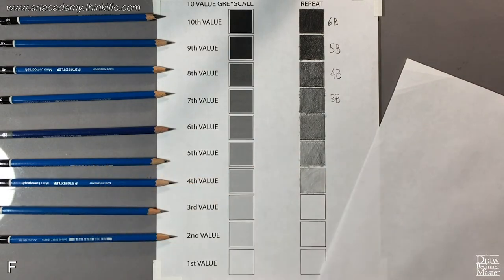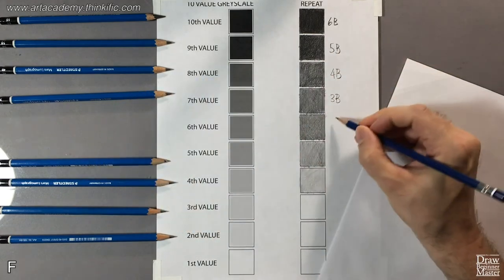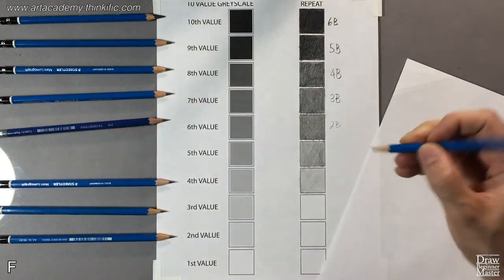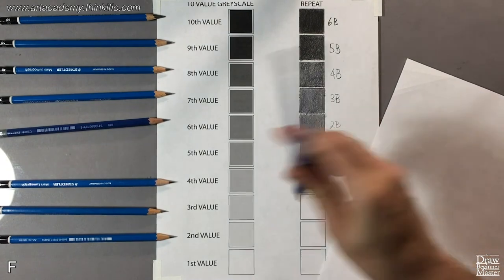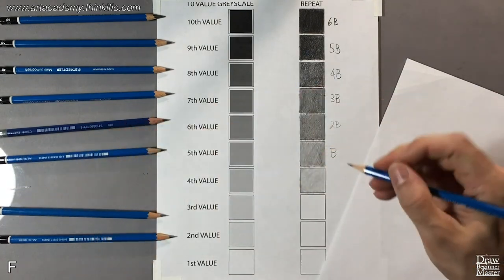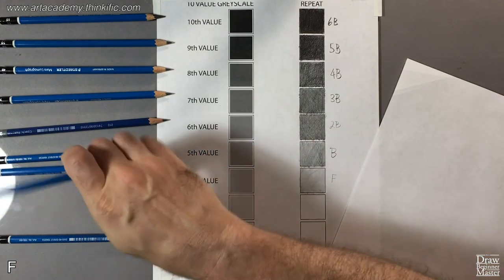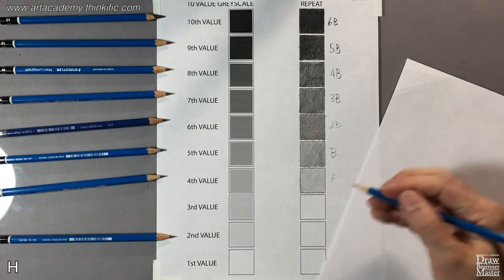Sorry, I forgot to write down the leads next to the values. The 6th value was a 2B, the 5th value was a B lead, and the 4th value is an F. Make sure you write all those leads down on your chart as well. This is going to come in handy throughout the rest of the course.